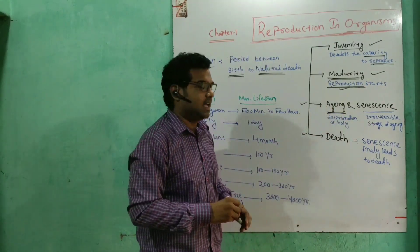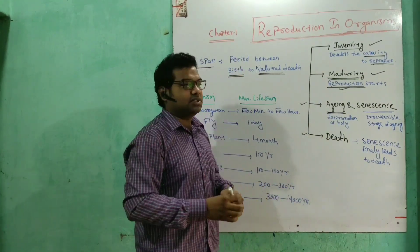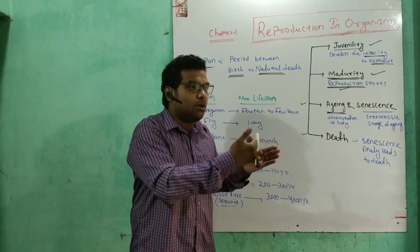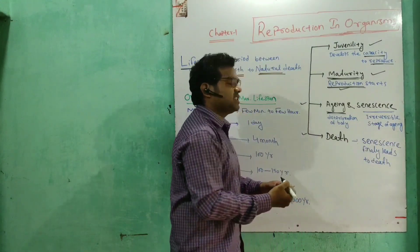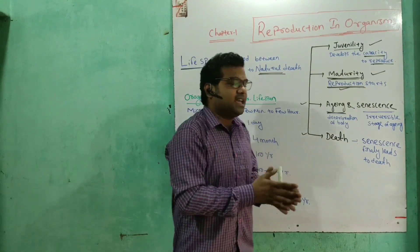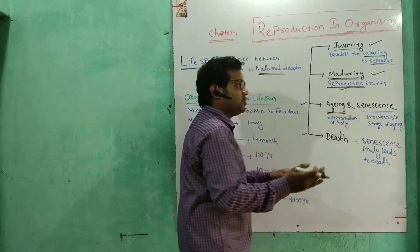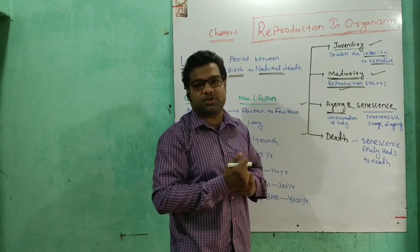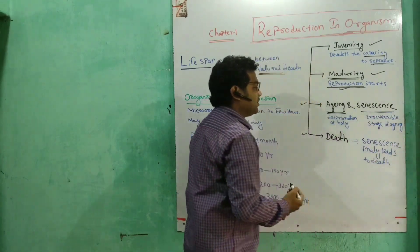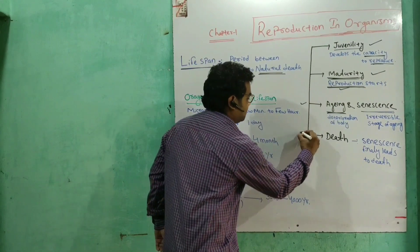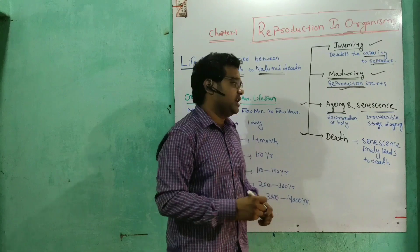The next stage is aging, which involves deterioration of the body — meaning the body progressively becomes weak. Senescence is the irreversible stage of aging. Irreversible means the body becomes weak and cannot recover. Senescence finally leads to death.